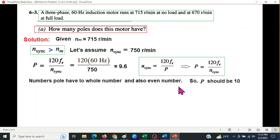So instead of 9.6, we can say that we should have 10 poles. The P should be 10. Now, with this assumption, we have to again verify this condition. Let's do that.